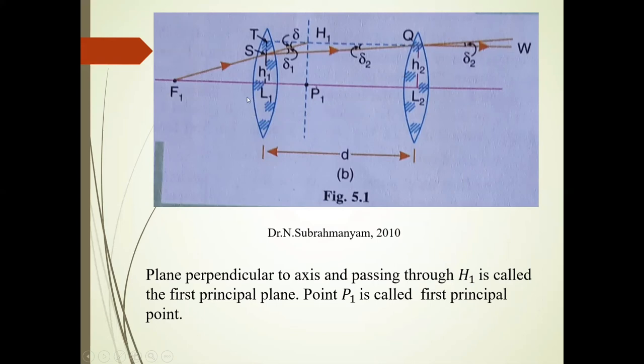If this F1S incident ray is extended in forward direction, and if this emergent UW ray is produced in backward direction, then they meet at H1 point. The plane passing through this H1 point is H1P1, perpendicular to the principal axis.